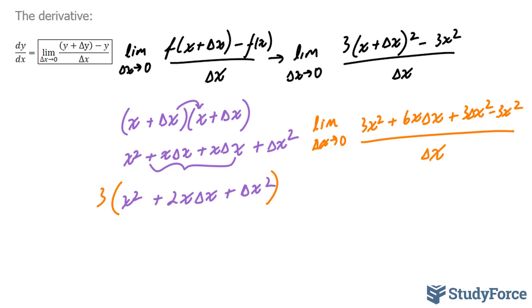Something interesting just happened. This 3x squared and this 3x squared went away, leaving us with the limit written the same way as before is 6x delta x plus 3 delta x to the power of 2.